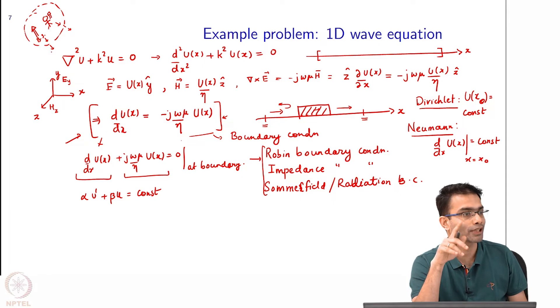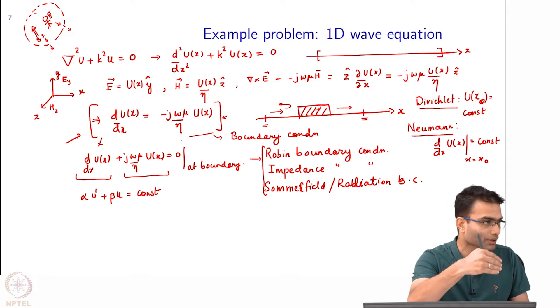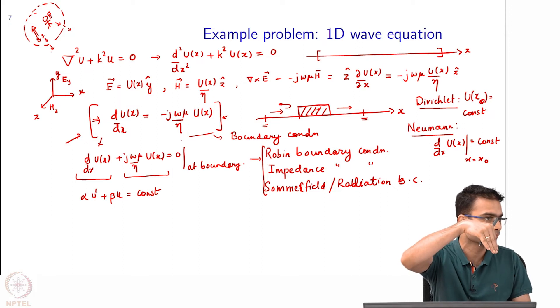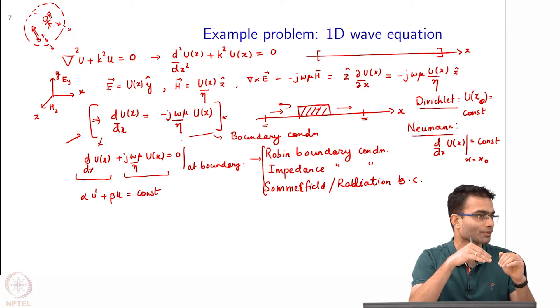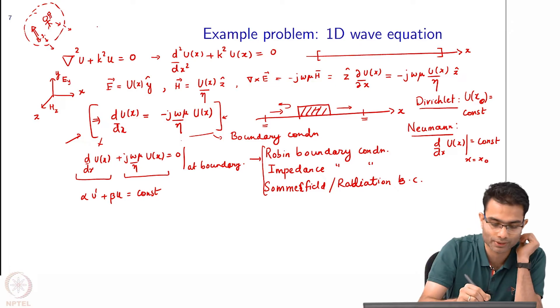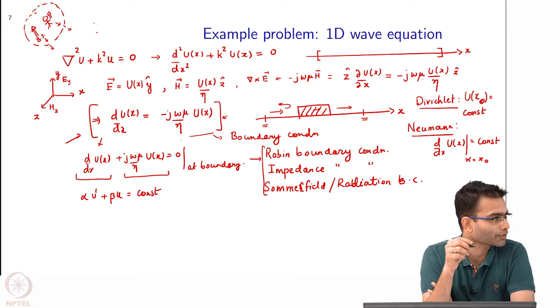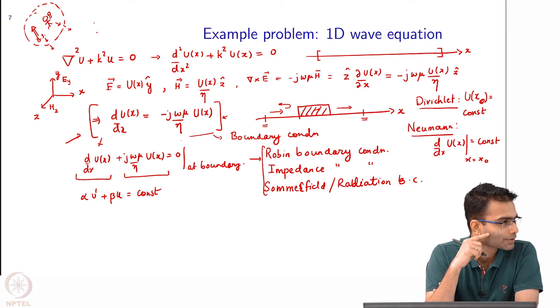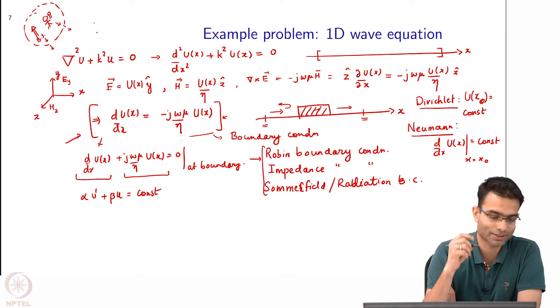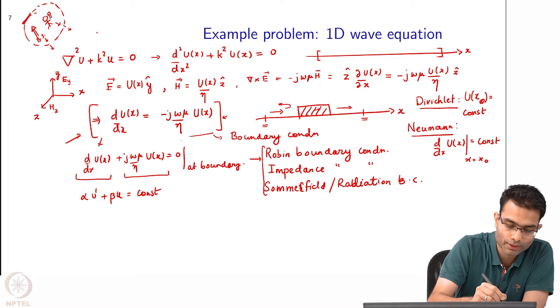Exponentially decay? You want the field to exponentially decay before the boundary? At the boundary you want the field to go to 0. Let me give you an example. Before the boundary should exponentially go to 0? Let us see the problem with that. Let us say that this part of the boundary over here is made out of this green part.